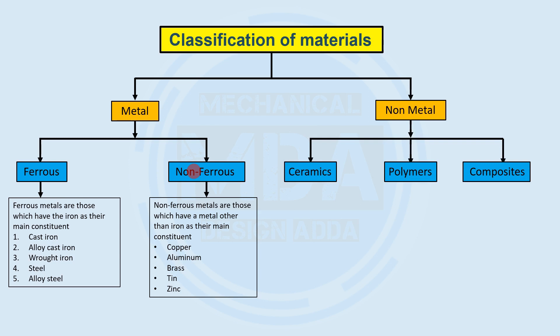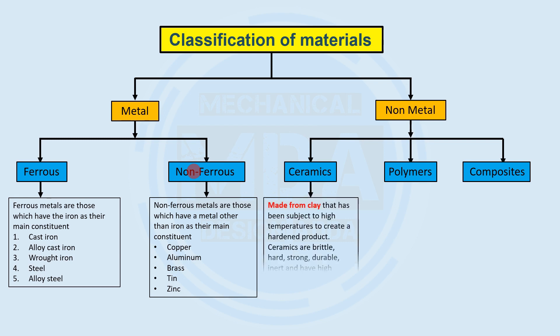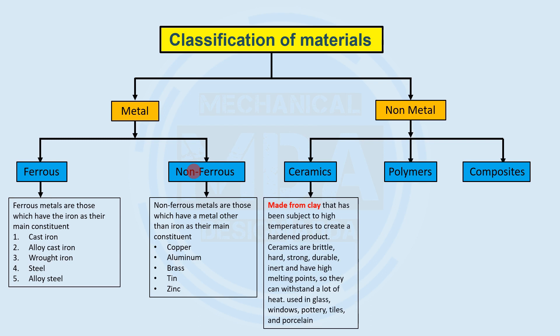Non-metal materials are classified into different categories. These include ceramics, polymers, composites, wood, and diamond — these are the non-metal materials.